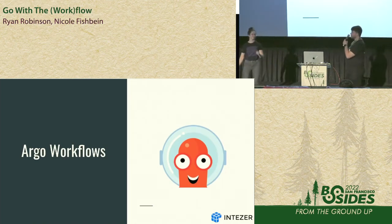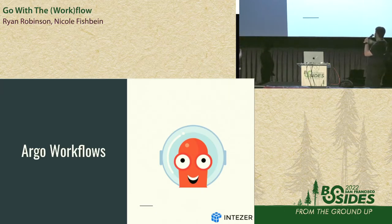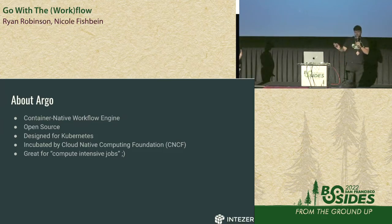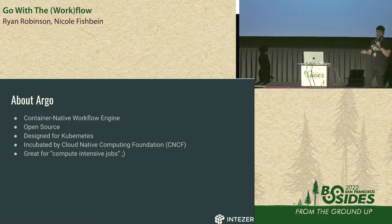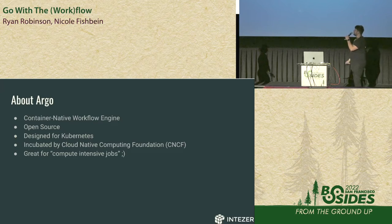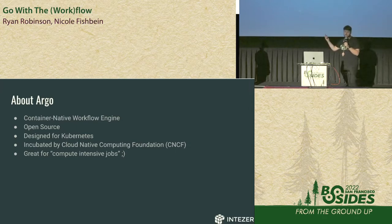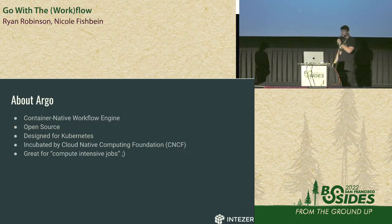Our first case study is Argo Workflows — in my opinion, the workflow software with the best logo. It's a container-native workflow engine. For those who don't know what container-native means, it's the base level of infrastructure — if you can run Kubernetes or containers, you can run the software. It's open source, which makes it also slightly easier to do research on. It's designed for Kubernetes and incubated by the Cloud Native Computing Foundation — the same people that maintain Kubernetes. So it's probably the most unofficial workflow engine for Kubernetes you'll get. And as a foreshadowing note, it's great for compute-intensive jobs.